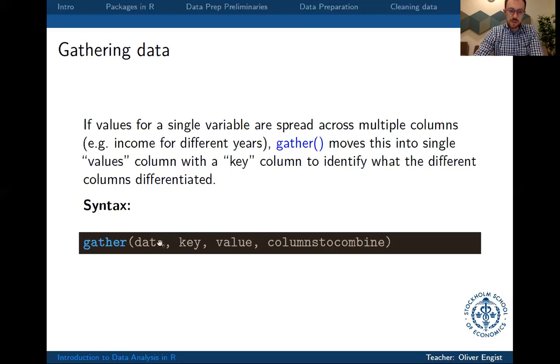And what gather does is it takes the data, you provide a key, which tells you what kind of new variable you want to create, and then what is the variable that you're observing for which you want to have a separate observation in each row.